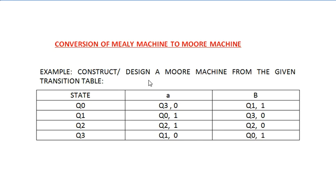Here I have taken another example, and I haven't taken any kind of state diagram — I have taken a state transition table. You can find out the equivalent Moore machine from this particular table. Now, looking into this example, can you say whether it is a Moore machine table or a Mealy machine table? For every transition there is an output associated with the states, meaning for every input there is a transition and an output as well — this is a Mealy machine transition table.